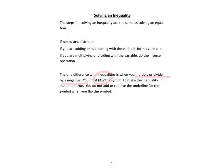Let me give you an example. We know that three is less than 15. If I were to multiply by positive three, we would get that nine is less than 45, and it works because I did it to both sides.